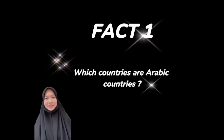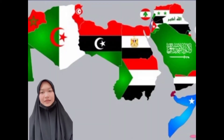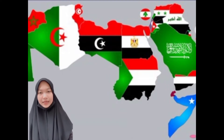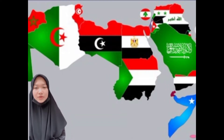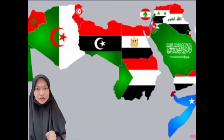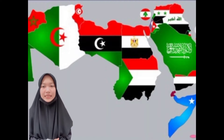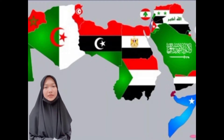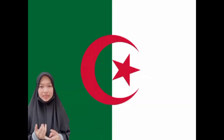Fact number one: which countries are Arabic countries? Arabic countries range from Morocco in North Africa and from there to the Persian Gulf. This region is also called the MENA, Middle East and North Africa region.